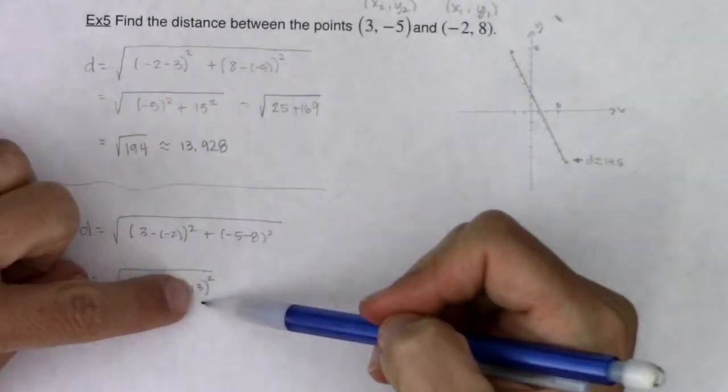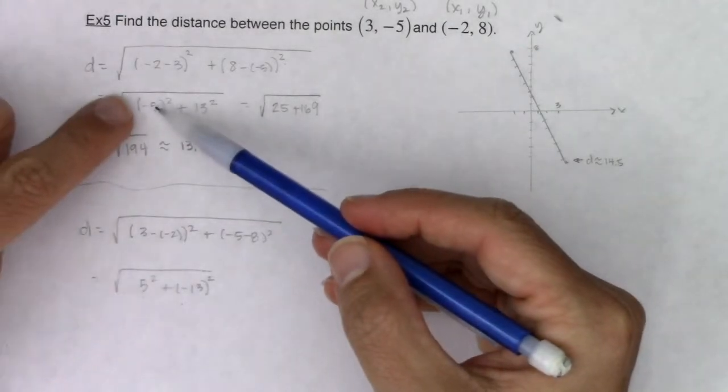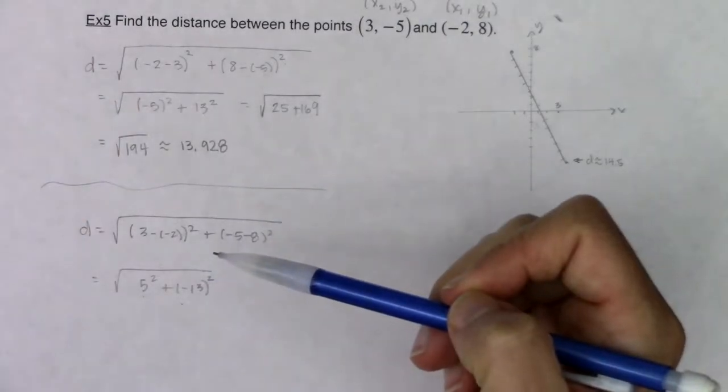So they're the same distance from the origin, it's just that this is on the left side of the origin, this is on the right side. Right side, left side. But when you square it, all those negative symbols go away.